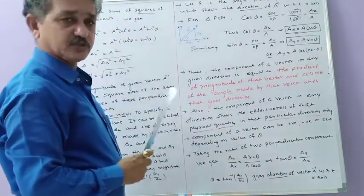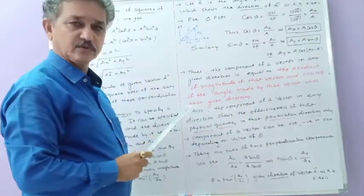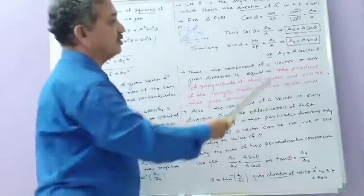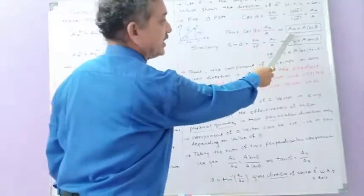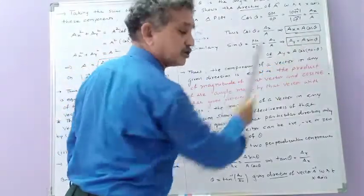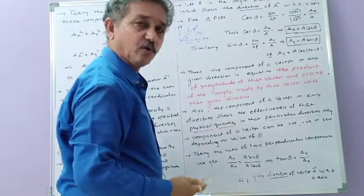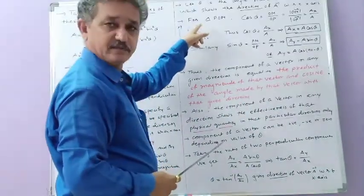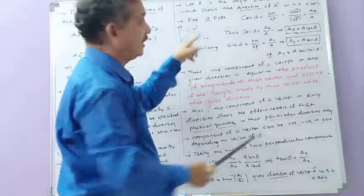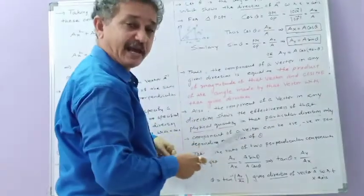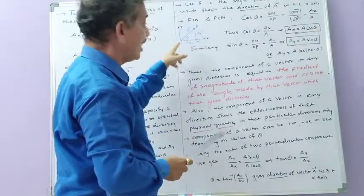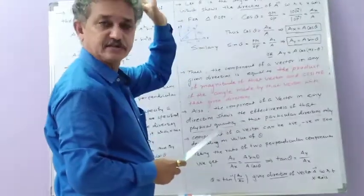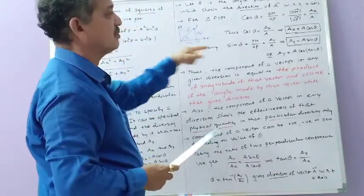From this we have the definition of the components of a vector. What is Ax? It is the product of A — the magnitude of the original vector — and cos θ, the cosine of the angle made by vector A with the x-axis.